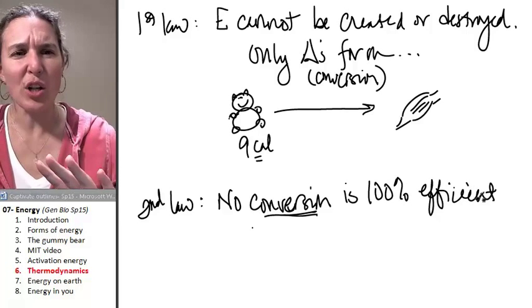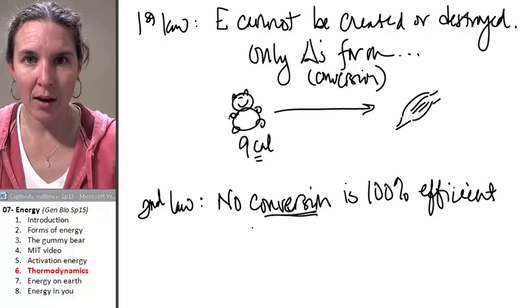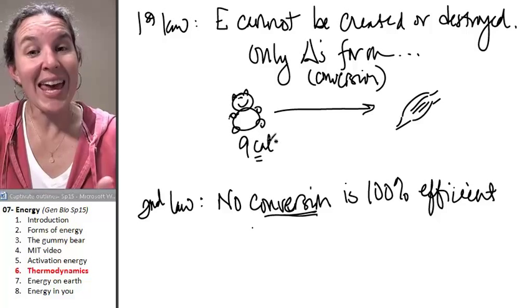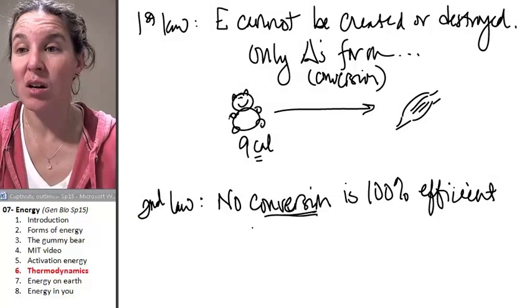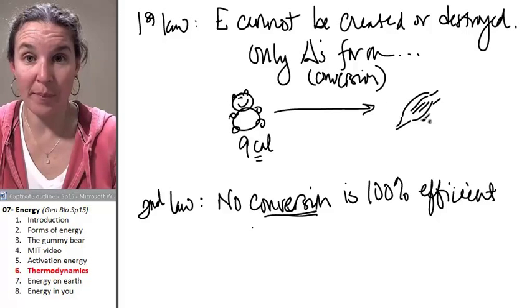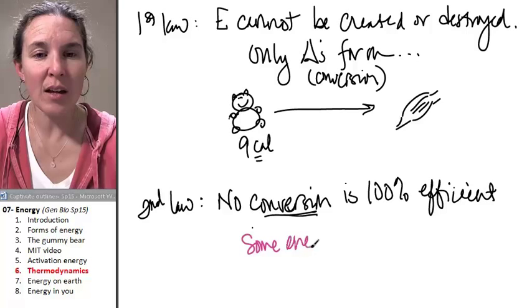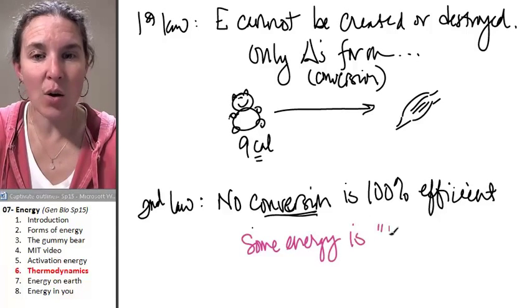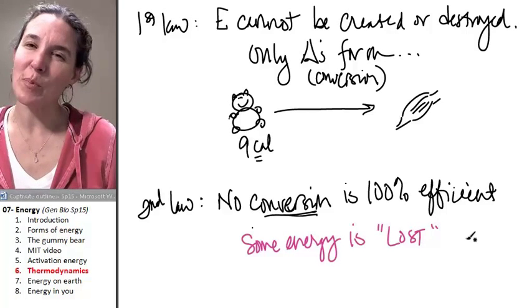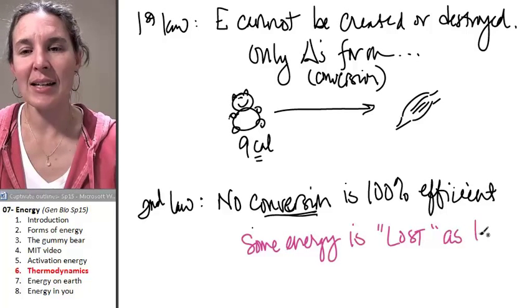Wait a second. But we don't lose energy. It doesn't disappear. We can't make it go away. But we can't turn all of it into its new form. And some energy in every conversion is, I'm going to say the word lost. Lost, but energy can't disappear. So, it's lost as heat.